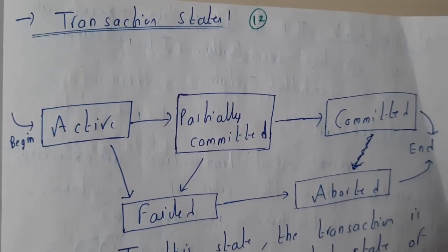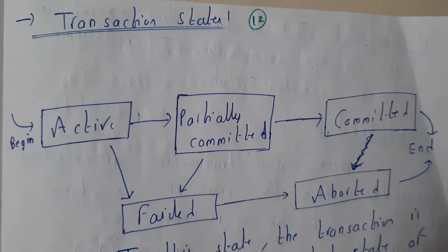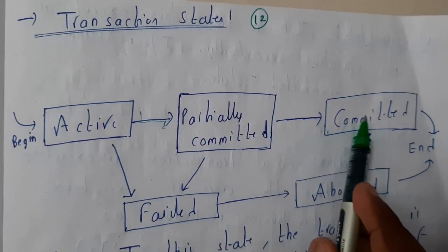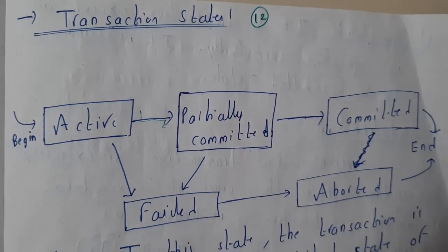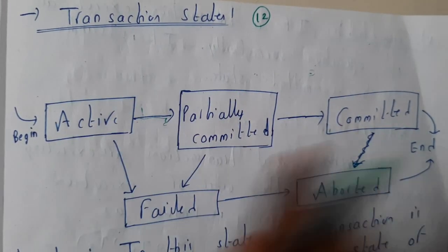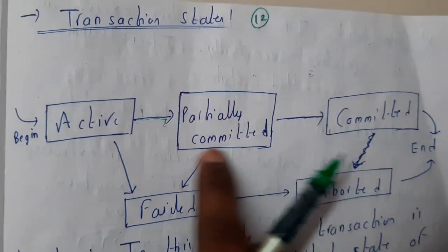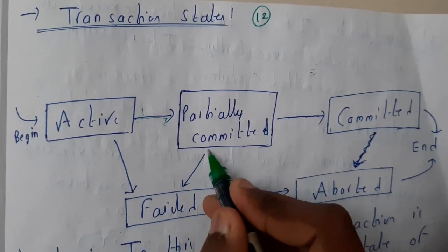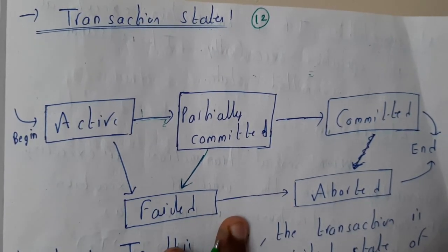Let us assume a few transactions going in this way. Basically a transaction started its execution, partial execution is done, and it went into committed state. Committed means the transaction completed successfully without any problem — that is our direct flow. After that, from an active state, after partial execution, it faced some issues in the middle and went to failed state.